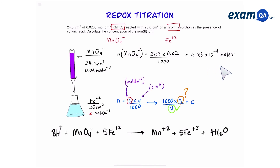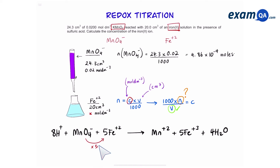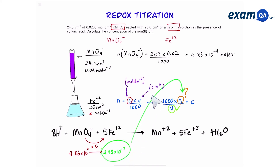You should know this overall equation, which is something we spoke about in the redox titrations introductory video. When you have manganate and iron, the ratio is 1 to 5. So if you know the moles of manganate, multiply it by 5 and that will give you the moles of iron — which gives us 2.43 × 10⁻³ moles. We can use that in the concentration equation, and that gives us the final concentration of 0.1215 mol per dm³.